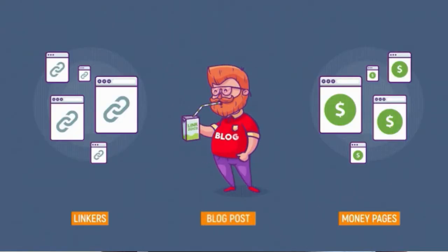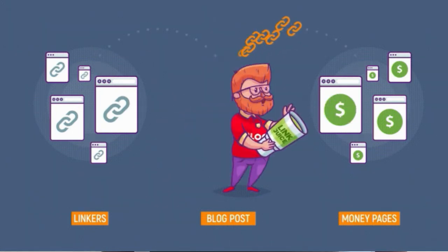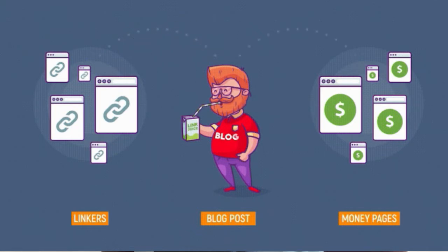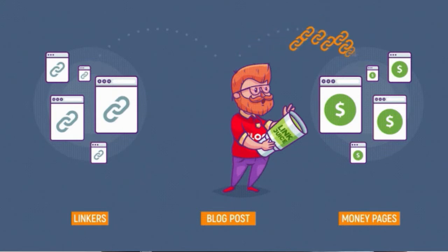You might have a doubt: I want to rank my product or service page on Google — what is the benefit of getting backlinks to my blog pages? Here is the key: whatever links come into your blog or information pages, you receive link juice. By using internal links, you can pass that link juice from your blog pages to your commercial pages — money pages, product pages, or service pages. So the information page collects link juice and passes it to your commercial pages through interlinks. That is the middleman method.